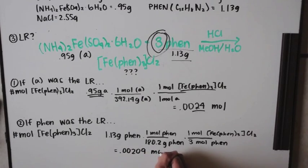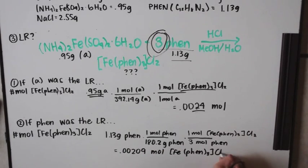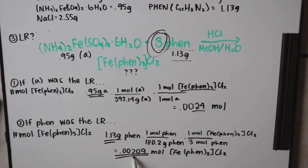tris phen chloride salt, and you would end up with 0.00209 moles. Also notice that three sig figs, but in the end, your phen is your limiting reagent.